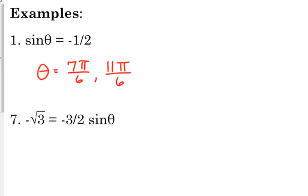Now, what if we've got some stuff outside of the trig function? Just like with all our other equations — exponentials, logarithms — we have to isolate that expression first. Same thing here: you have to isolate that trig expression before you can go anywhere. We've got to get that sine of theta by itself. Right now it's being multiplied by negative 3 over 2, so we divide — or multiply by the reciprocal, negative 2 thirds.